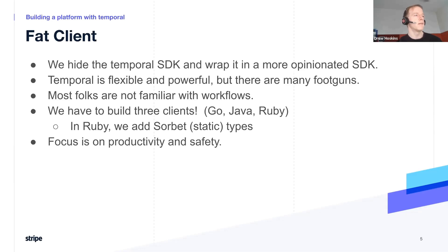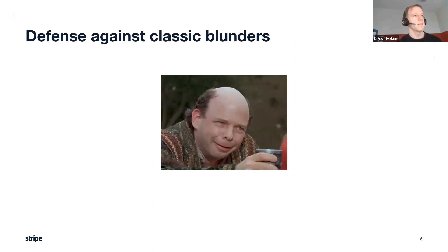In Ruby, our client adds Sorbet types — Sorbet is to Ruby as TypeScript is to JavaScript, or as Hack is to PHP — so we get static types. If anyone on the call is using Sorbet, we'd love to connect with you. The focus of our fat client is on productivity and safety. In this talk I'm just going to cover some of the safety things we've done. We want to protect our users against classic blunders — we actually have a document called 'Classic Blunders' that aggregates the most commonly seen pitfalls.